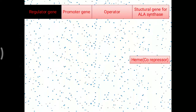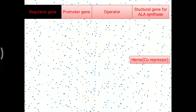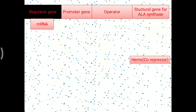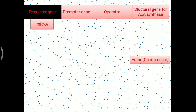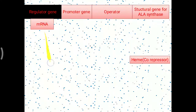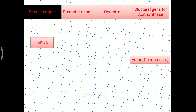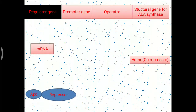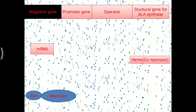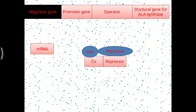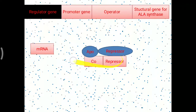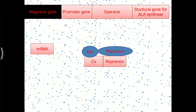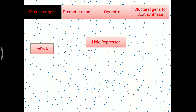When heme is synthesized, it also acts as a controlling molecule for heme synthesis, but heme alone is not able to work. The regulatory gene of ALA synthase produces a particular mRNA, and with the help of that mRNA an aporepressor molecule is generated. This aporepressor combines with a corepressor — apo plus core — to make a holorepressor molecule. The corepressor here is simply the heme molecule itself.